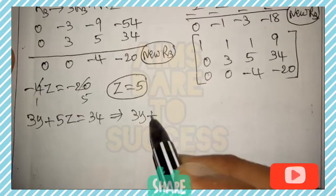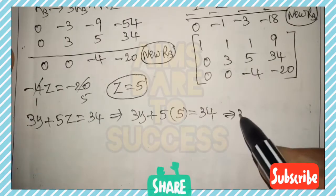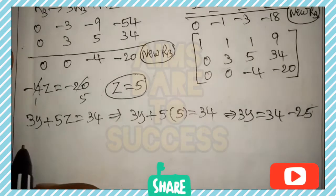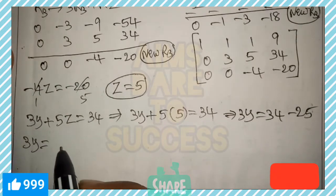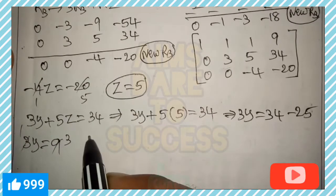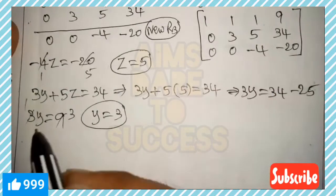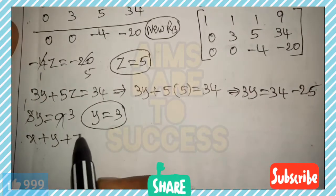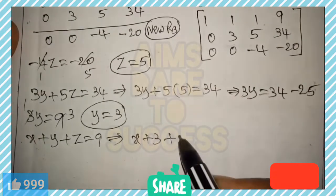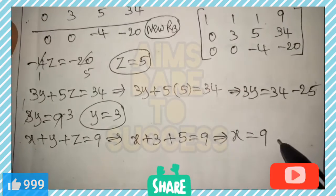From the third row, -4z = -20, so z = 5. From the second row, 3y + 5z = 34: substituting z=5 gives 3y + 25 = 34, so 3y = 9, meaning y = 3. From the first row, x + y + z = 9: substituting y=3 and z=5 gives x + 3 + 5 = 9.